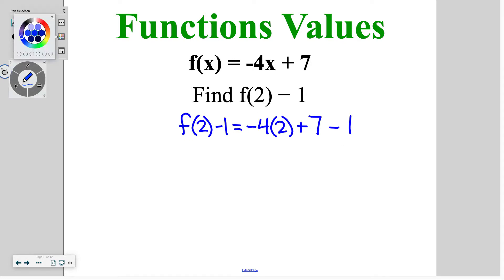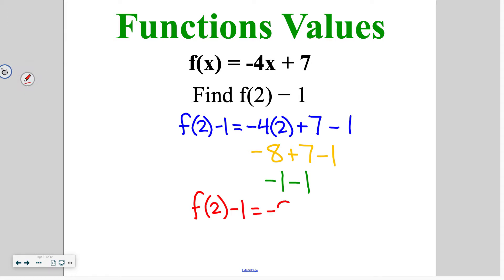Again, we're going to solve that right side of the equation. So I have negative 4 times 2, which is negative 8, plus 7, minus 1. Negative 8 plus 7 is going to give us negative 1. And then we've got negative 1 minus 1. So our final answer is going to say f of 2 minus 1 is equal to negative 2, because negative 1 minus 1 is negative 2.